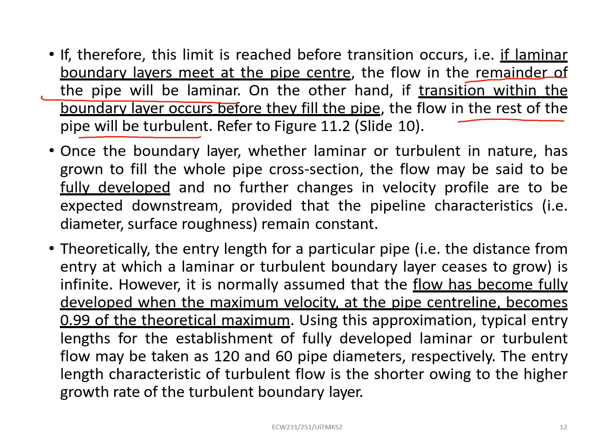Once the boundary layer, whether laminar or turbulent in nature, has grown to fill the whole pipe with the fluid, the flow may be said to be fully developed. When it's fully developed, it means no further changes will occur on the velocity profile. And they already provide that the pipeline characteristics, diameter and surface roughness, will remain constant. When fully developed, everything will remain constant - diameter, surface roughness, all will be constant.